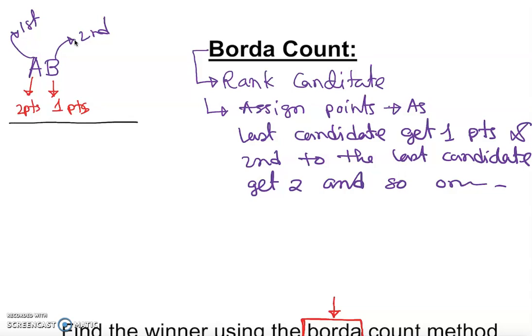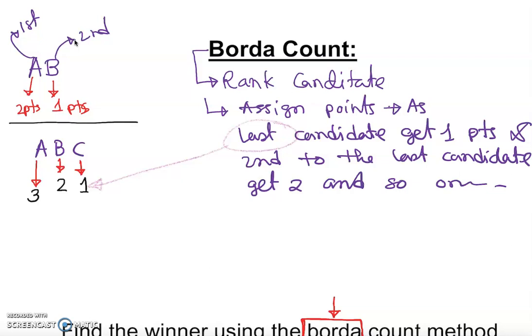Now if I have more than two candidates — say A, B, C, three candidates — then: C gets one point, B gets two points, and A gets three points. The last place gets the lowest value of one point.